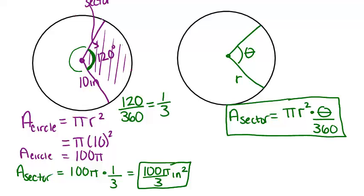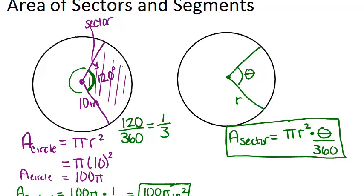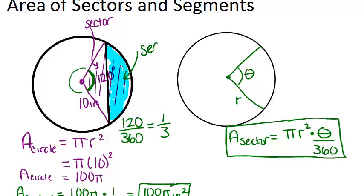Now what about the other term: segment? A segment of a circle is what you get when you add in an extra line — a chord — to connect the two points on the circle. The segment is the portion of the circle that's not the triangle. So a segment is a portion of a sector. If you want to figure out the area of a segment, all you have to do is first figure out the area of the sector, and then subtract the area of the triangle.